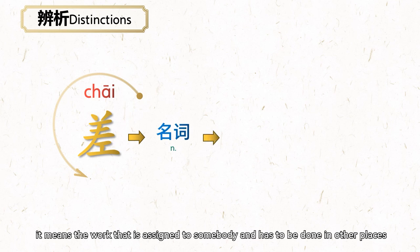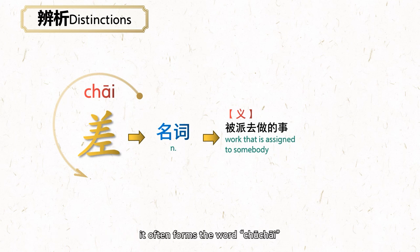When it is read as chāi, it means the work that is assigned to somebody and has to be done in other places. In this sense, it often forms the word 出差.